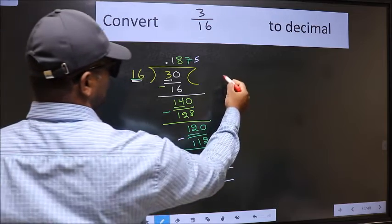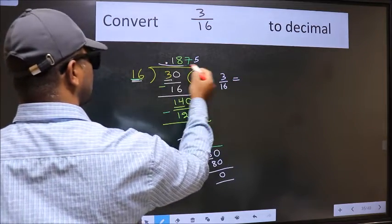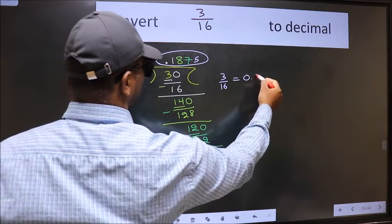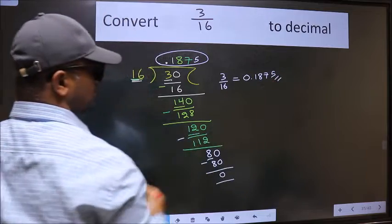Therefore, decimal of 3 by 16 is this. That is 0.1875. This is our answer.